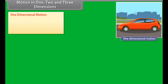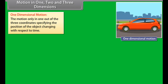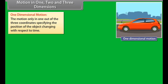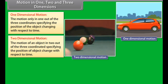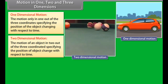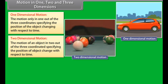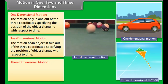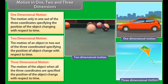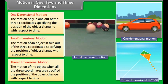One-dimensional motion: Motion in which only one out of three coordinates specifying the position of the object changes with respect to time. Example: a car traveling in a straight line. Two-dimensional motion: Motion in which two out of three coordinates specifying the position of the object change with respect to time. Example: a billiard ball moving over a billiard table. Three-dimensional motion: Motion in which all three coordinates change with respect to time. Example: a kite flying on a windy day.